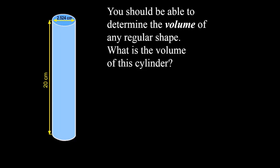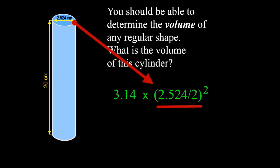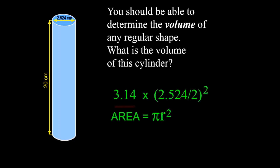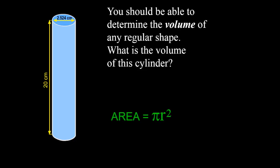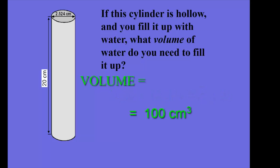For any regular shape, you can take the measurement of each dimension and use those measurements to figure out the volume. For a cylinder measured at 20 centimeters in height and 2.5 to 4 centimeters in diameter, the area is found using the radius — which is half the diameter — squared times pi, or pi r squared. When you multiply pi times the radius squared times 20 centimeters of height, that gives you 100 cubic centimeters.